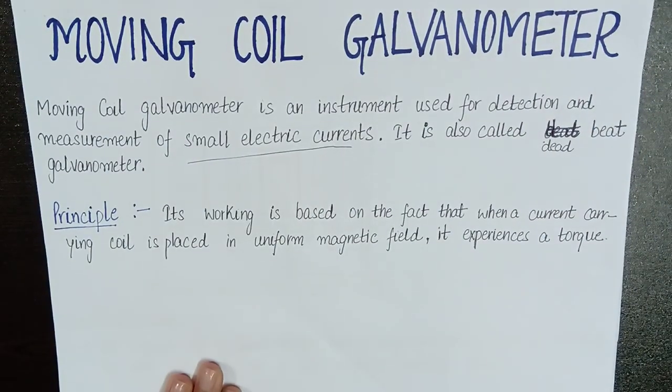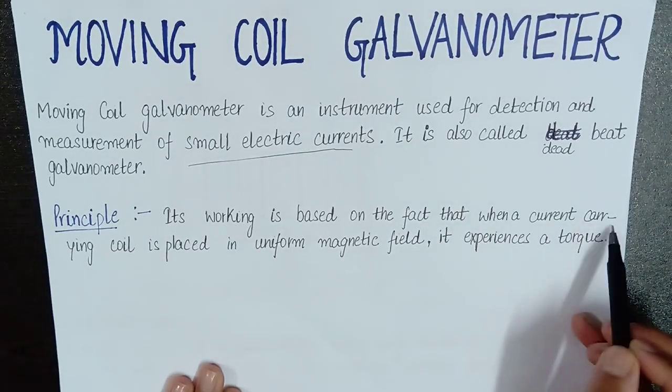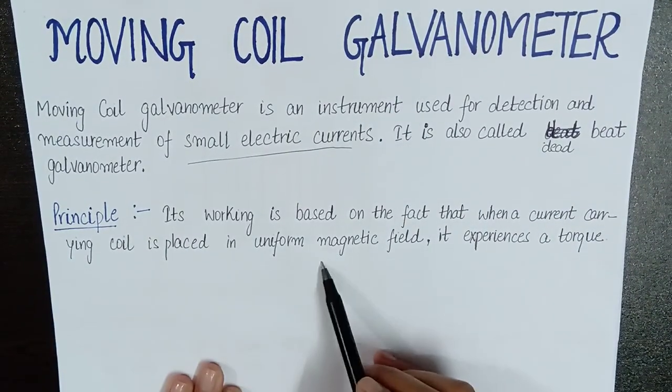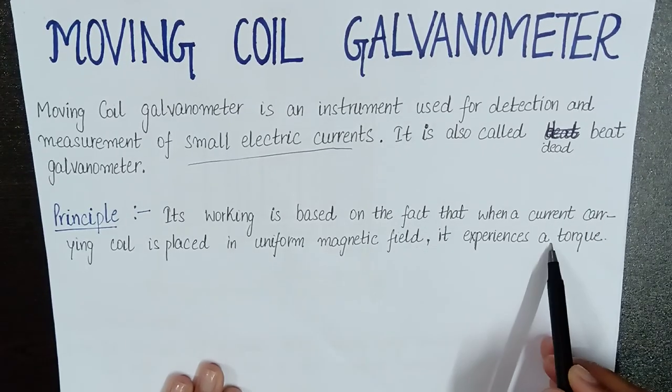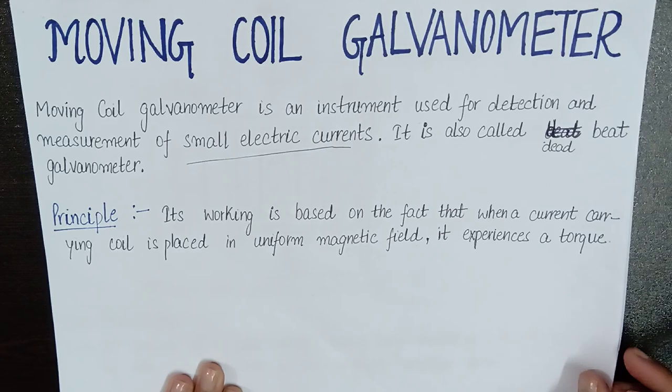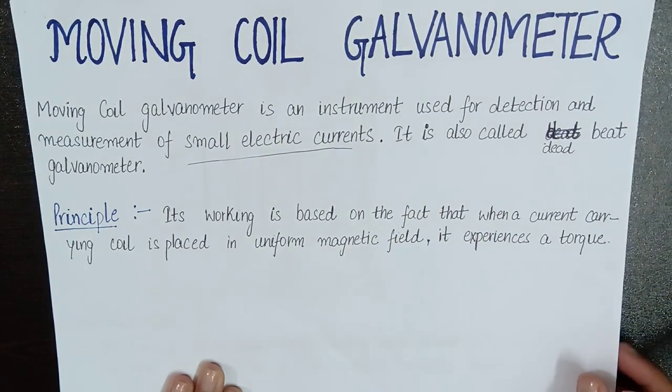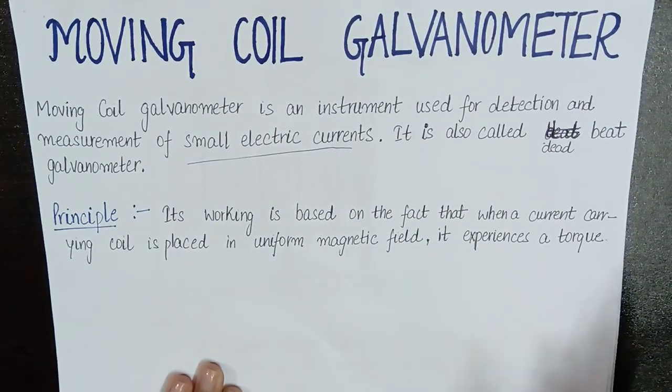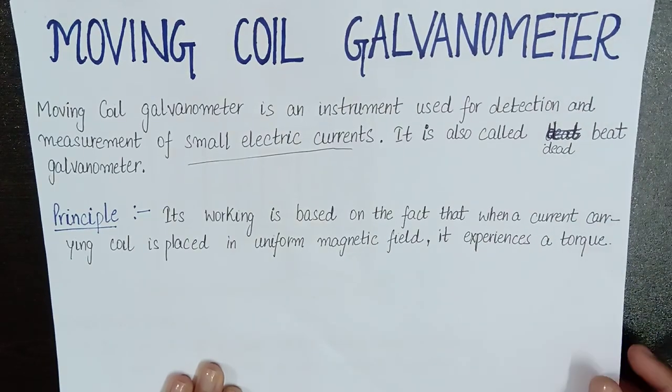And what is the working principle? It is based on the principle that when a current carrying coil is placed in a uniform magnetic field, then it experiences a torque. If we keep the current carrying coil in a uniform magnetic field, what is the torque acting on that coil? It will move.